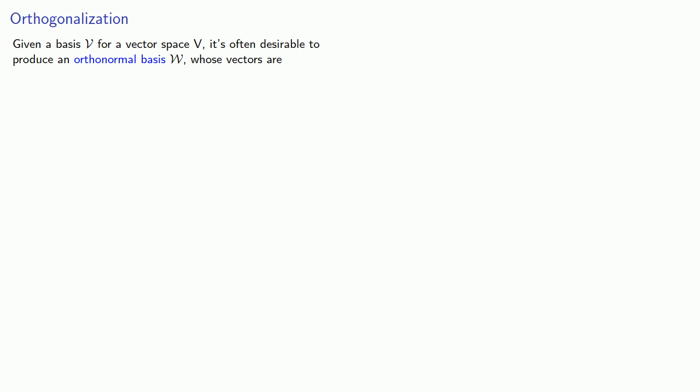Given a basis for a vector space, it's often desirable to produce an orthonormal basis whose vectors are orthogonal with magnitude 1. A common approach to producing this orthonormal basis is known as the Gram-Schmidt algorithm.